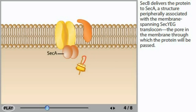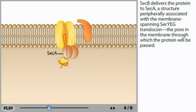SecB delivers the protein to SecA, a structure peripherally associated with the membrane-spanning SecYEG translocon — the pore in the membrane through which the protein will be passed.